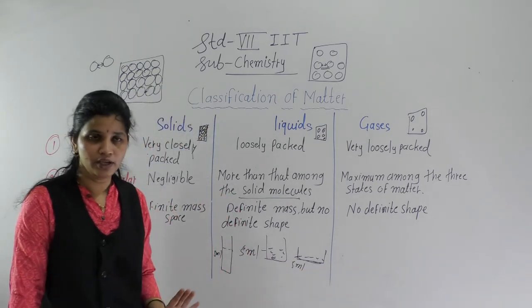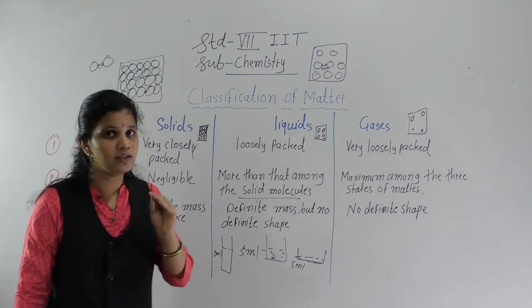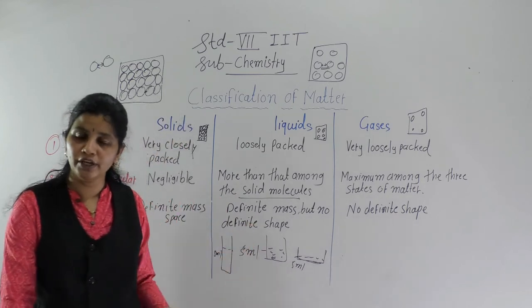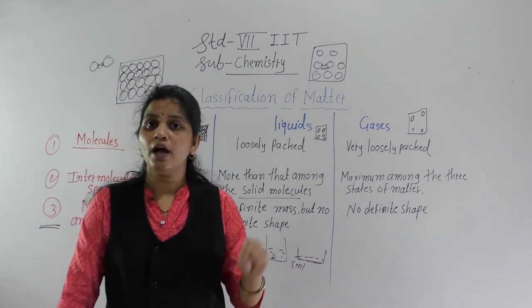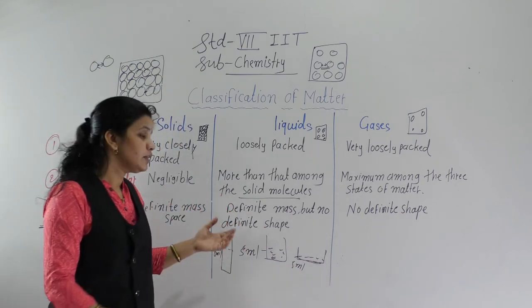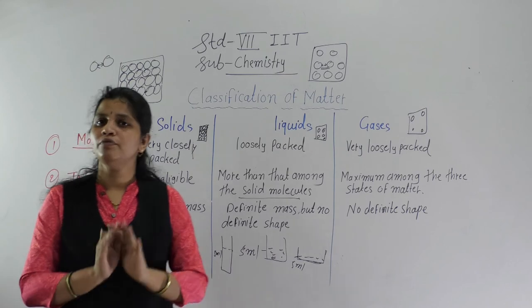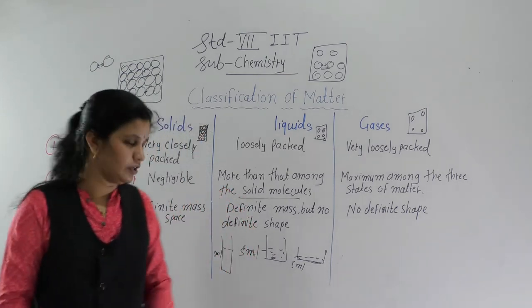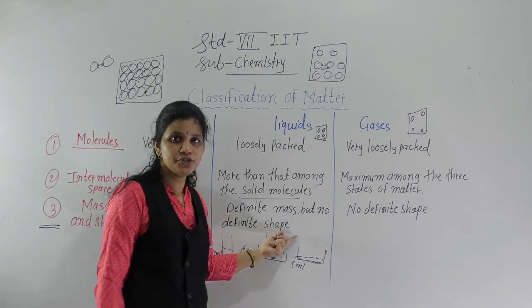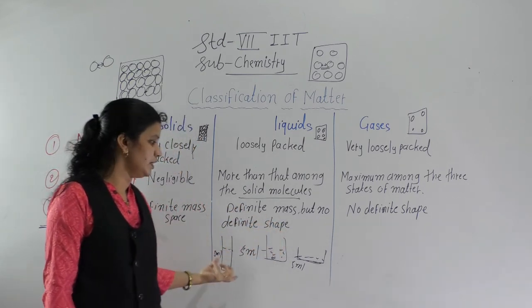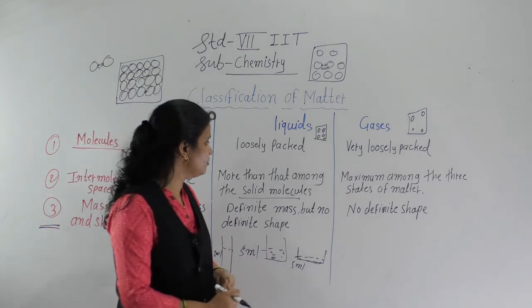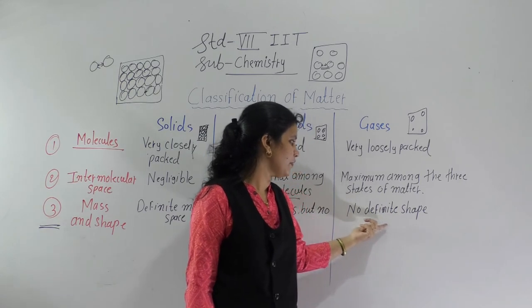Does everyone understand? For the second point, listen carefully. If you have any doubt about any point, please ask me — I will clear it and then we will continue. In the liquid state, there is a definite mass but no definite shape. That is why liquids do not have a definite shape.